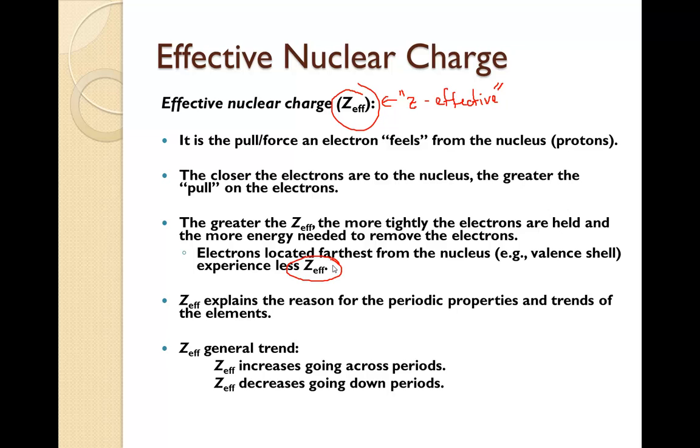Z effective explains the reason that periodic properties and trends of the elements occur. So in general, if we're looking at the periodic table, here's just a generic picture of the periodic table. It increases as you go across the periods. It increases from left to right. And it decreases as you go down, meaning it's increasing if we reverse that as we go up. So the more we go diagonally towards fluorine, the greater the Z effective is going to be.